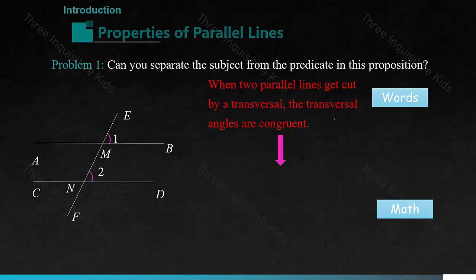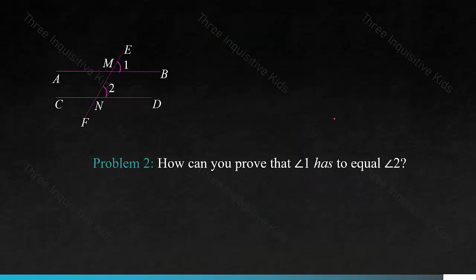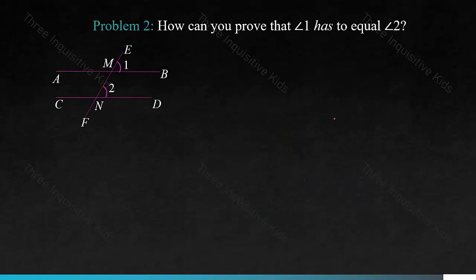How would you say it in math? As shown in the figure, AB is parallel to CD. Angle 1 and angle 2 are the transversal angles created when lines AB and CD get intersected by line EF. Prove angle 1 equals angle 2.